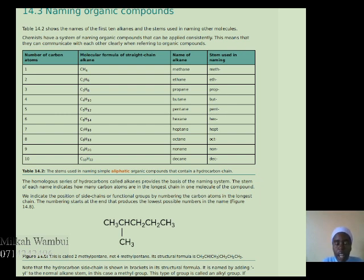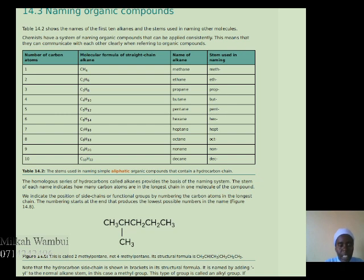The organic compound with five carbon atoms is pentane, its stem is pent and it is written as C5H12. The one with six carbon atoms is named hexane, written as C6H14 and the stem used is hex. The one with seven carbon atoms has molecular formula C7H16 and the stem used is hept.